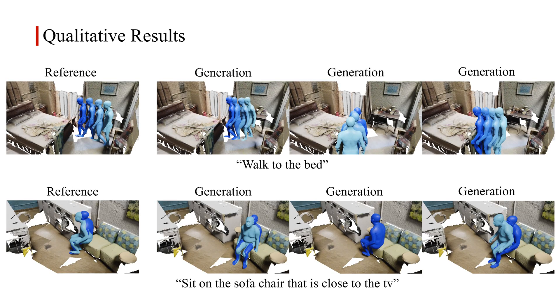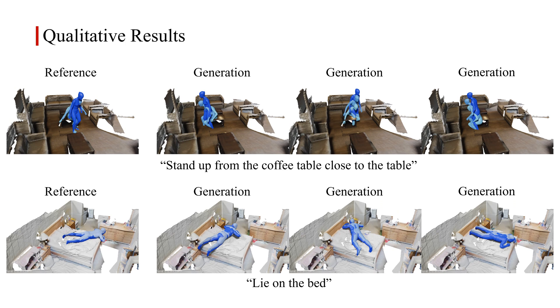We provide some qualitative generation results. For each scenario, we present three different generation results. The first column is for reference purposes. The results show that our model can generate human motions that are diverse and semantically consistent with the language description.